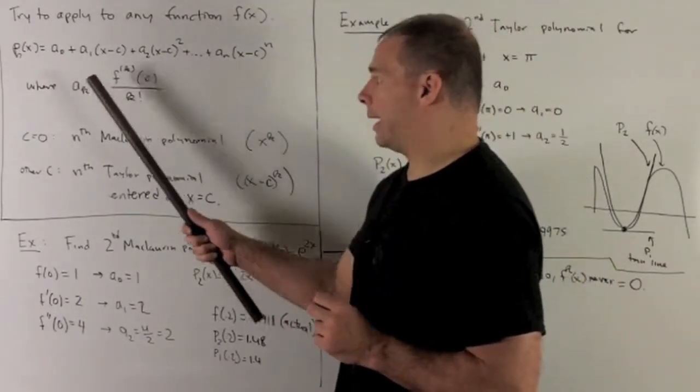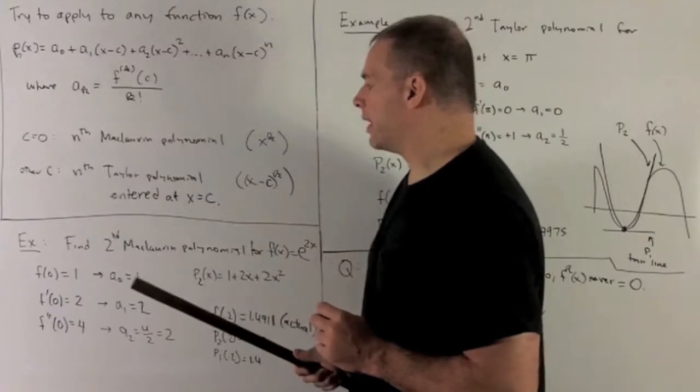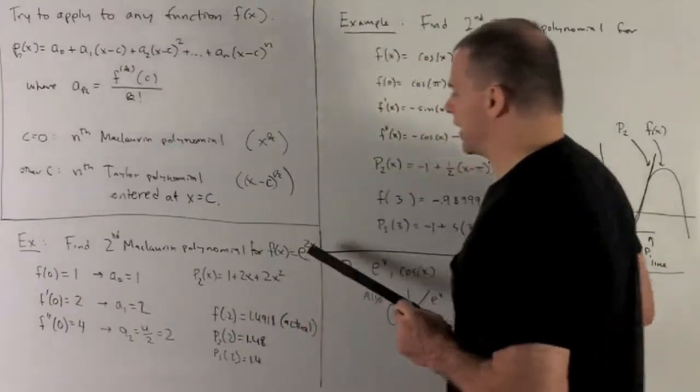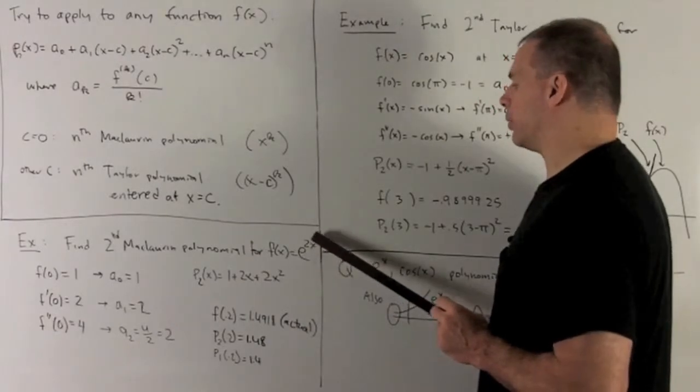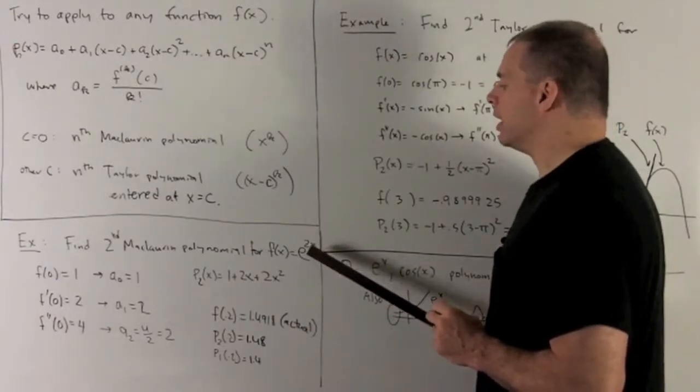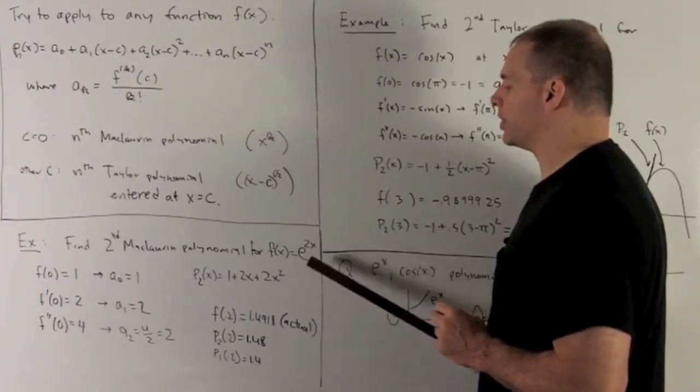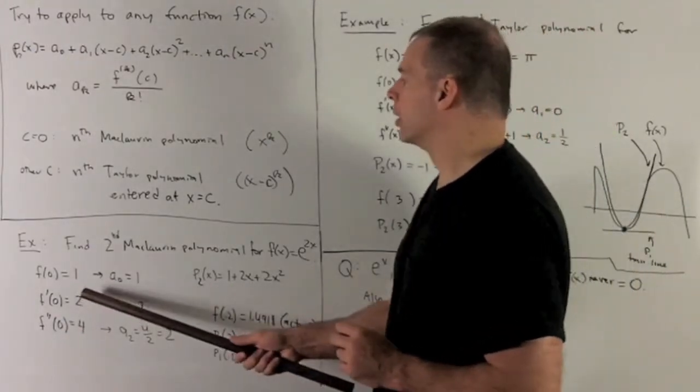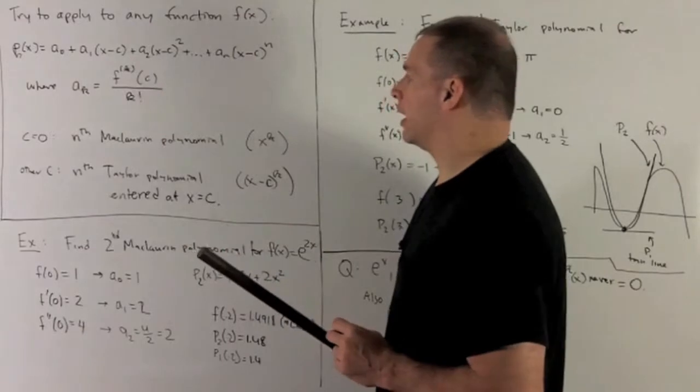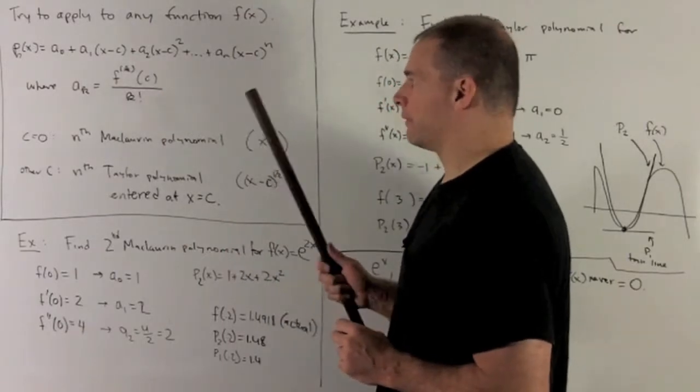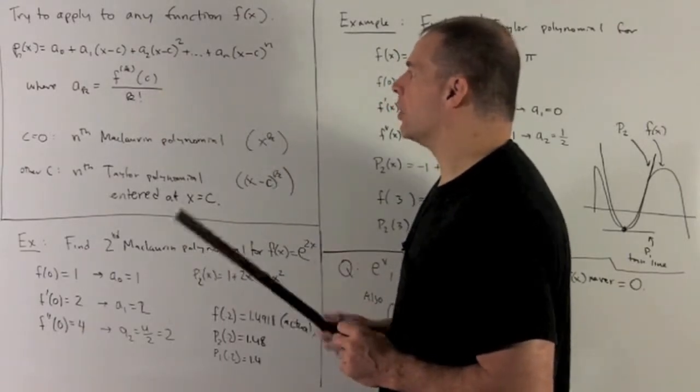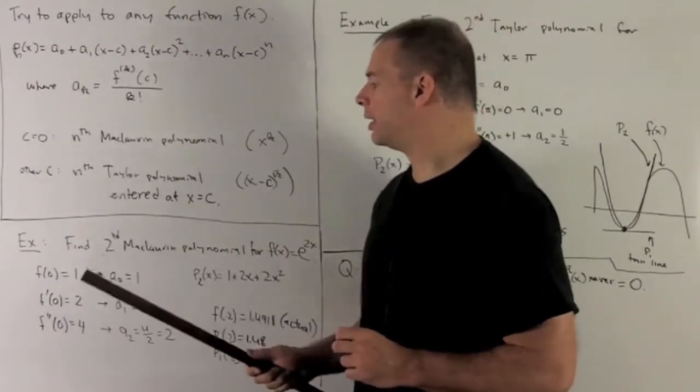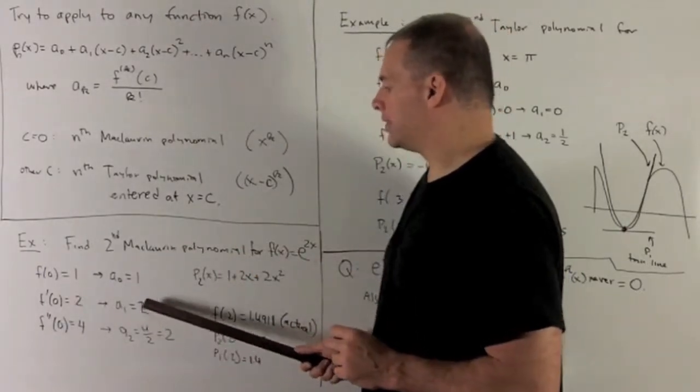To get a₁, we're going to take the first derivative, evaluated at 0. So the derivative of this is 2e to the 2x. If I put a 0 in there, 2e to the 0, which is just 2. So our rule says a sub 1 equals first derivative, evaluated at 0, divide by 1 factorial, which is just 1. So we'll have a sub 1 is equal to 2.